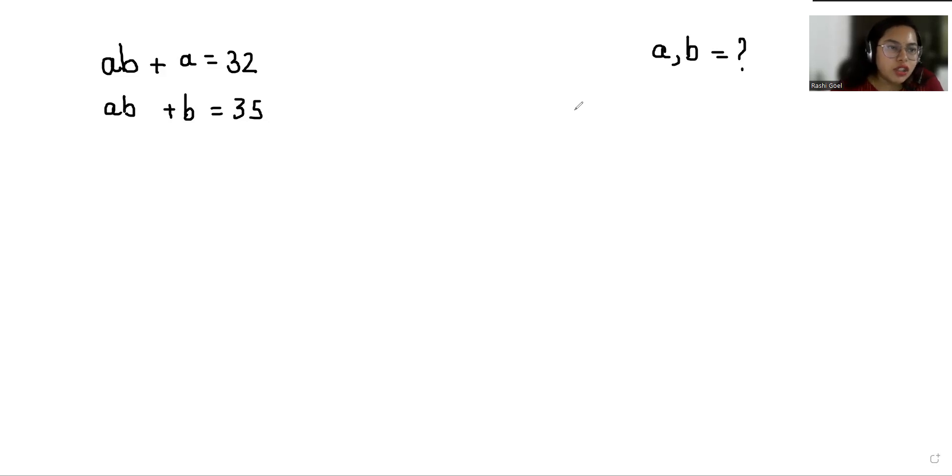My name is Rashi Goyal and in this video we are going to solve AB plus A equals 32, AB plus B equals 35, and we have to find the value of A and B. So let's start with today's video solution.